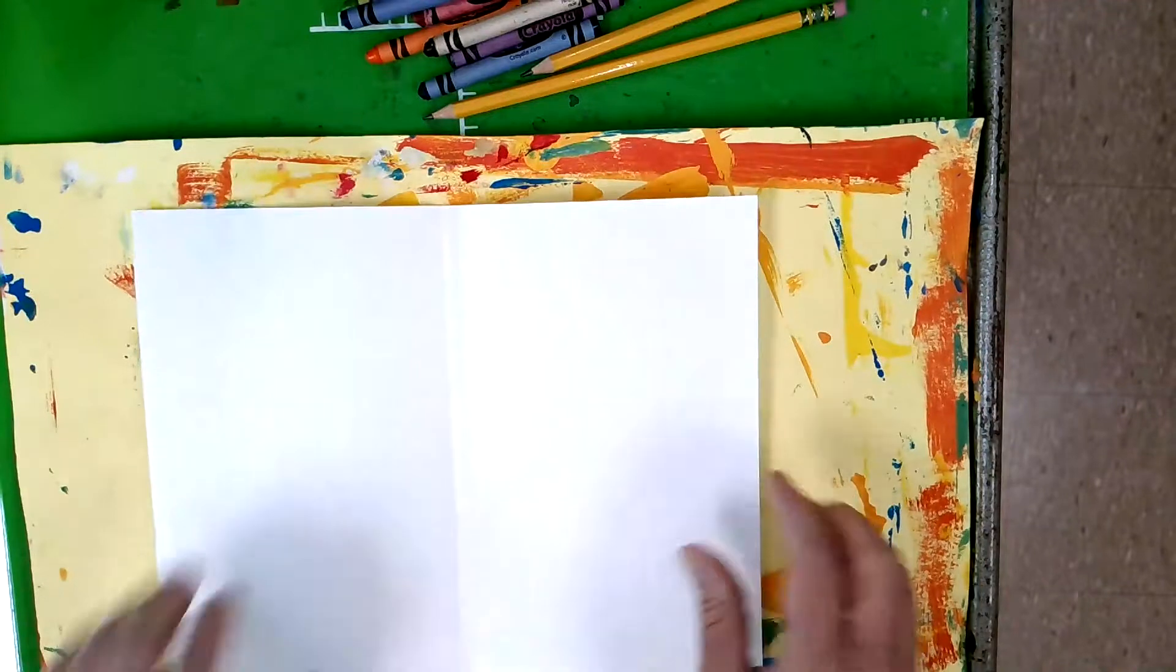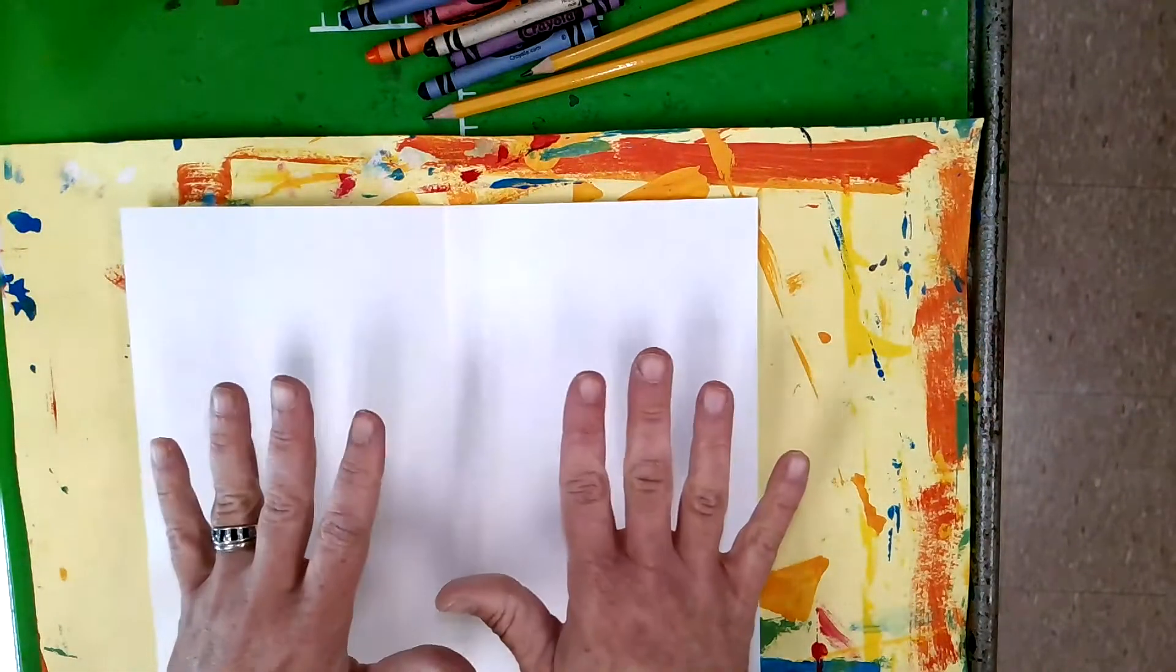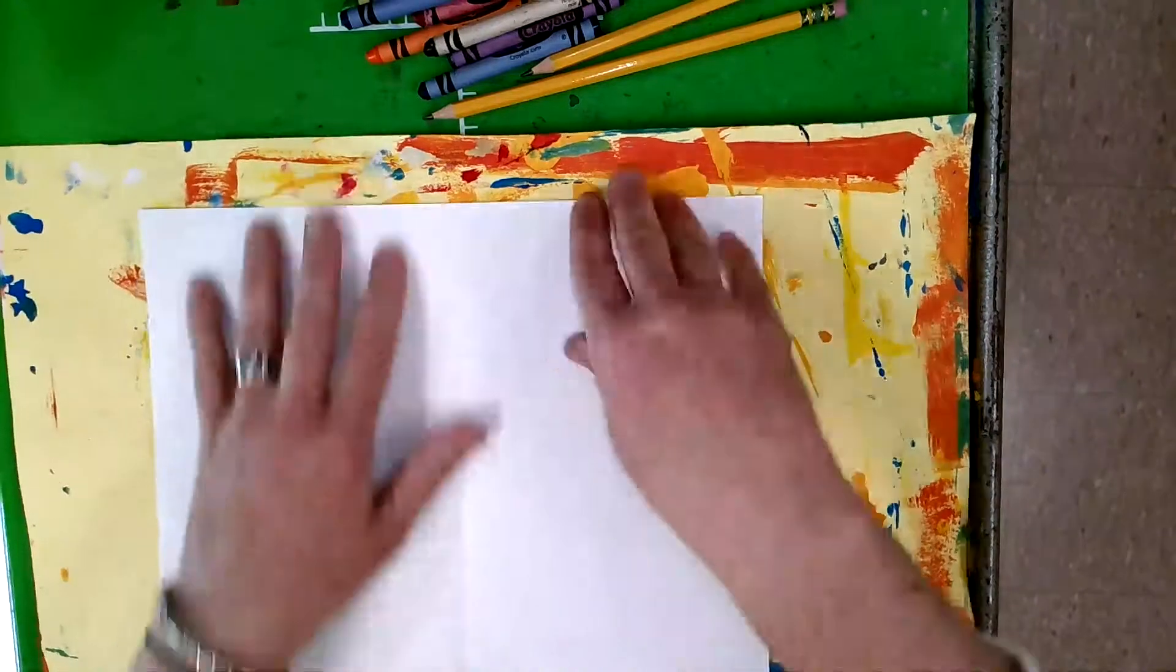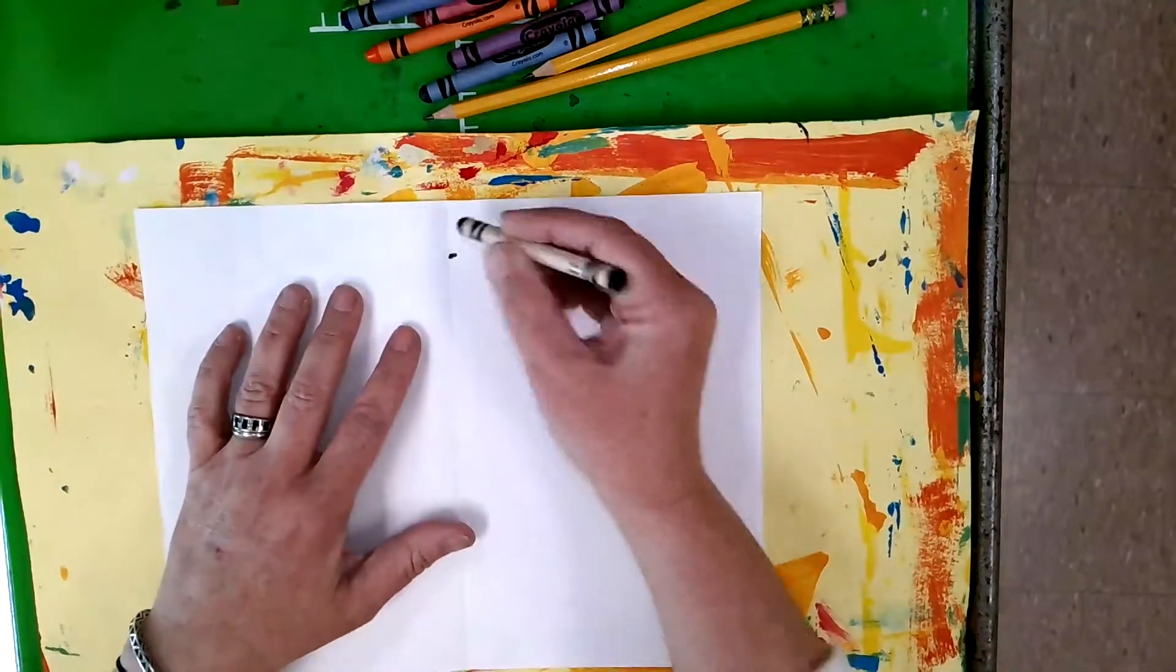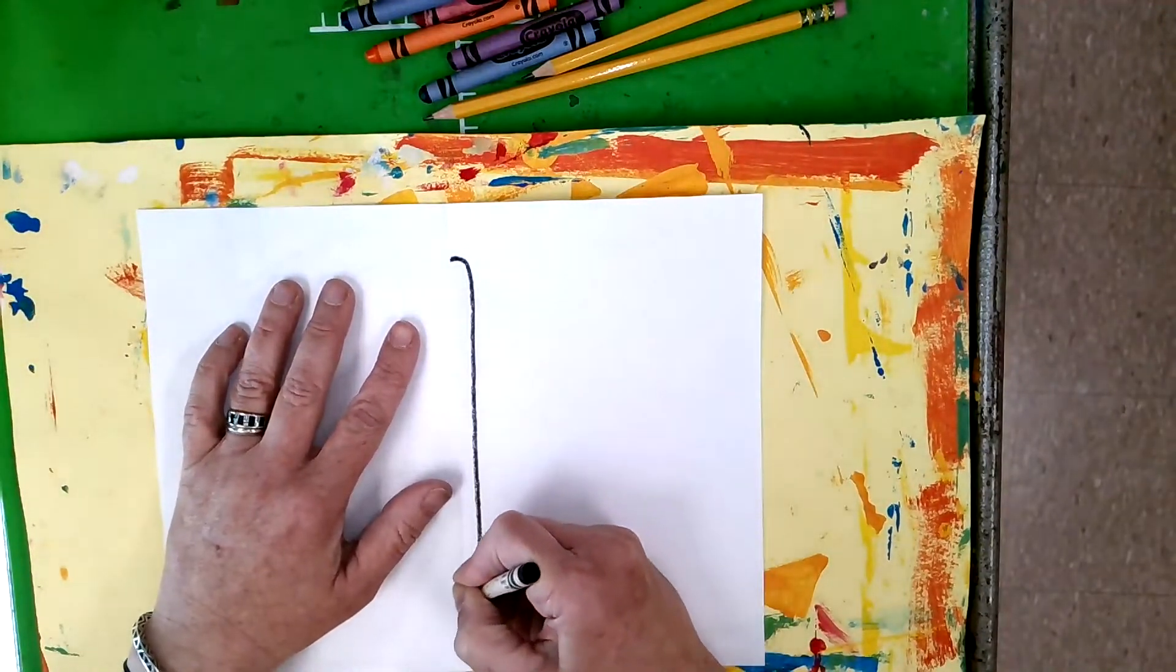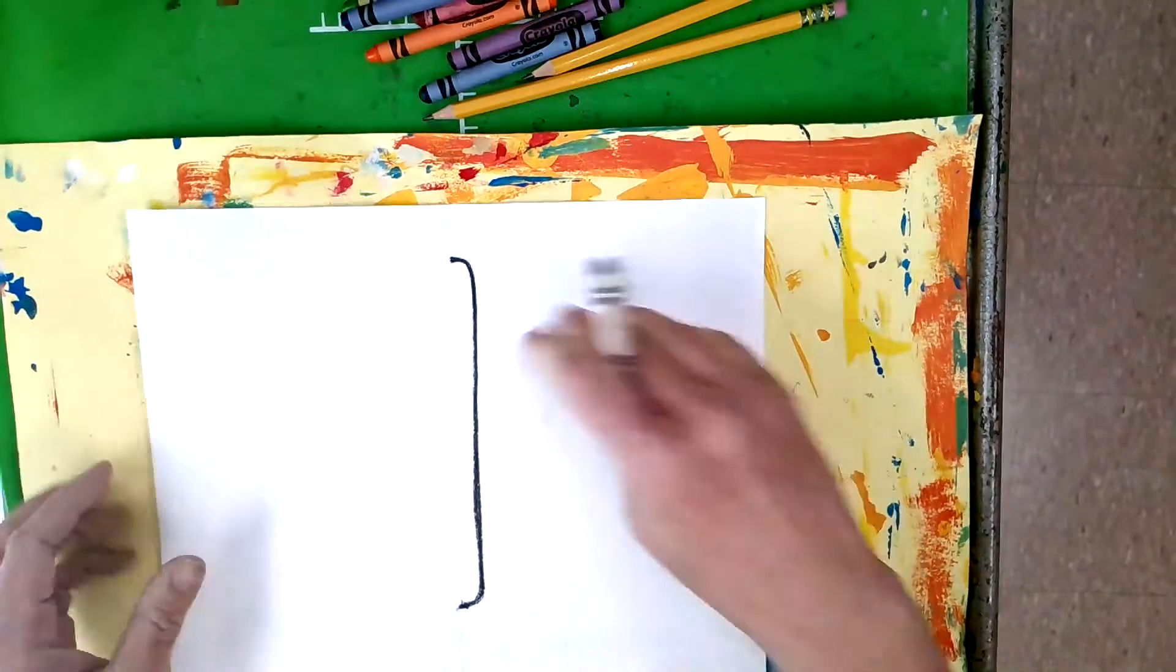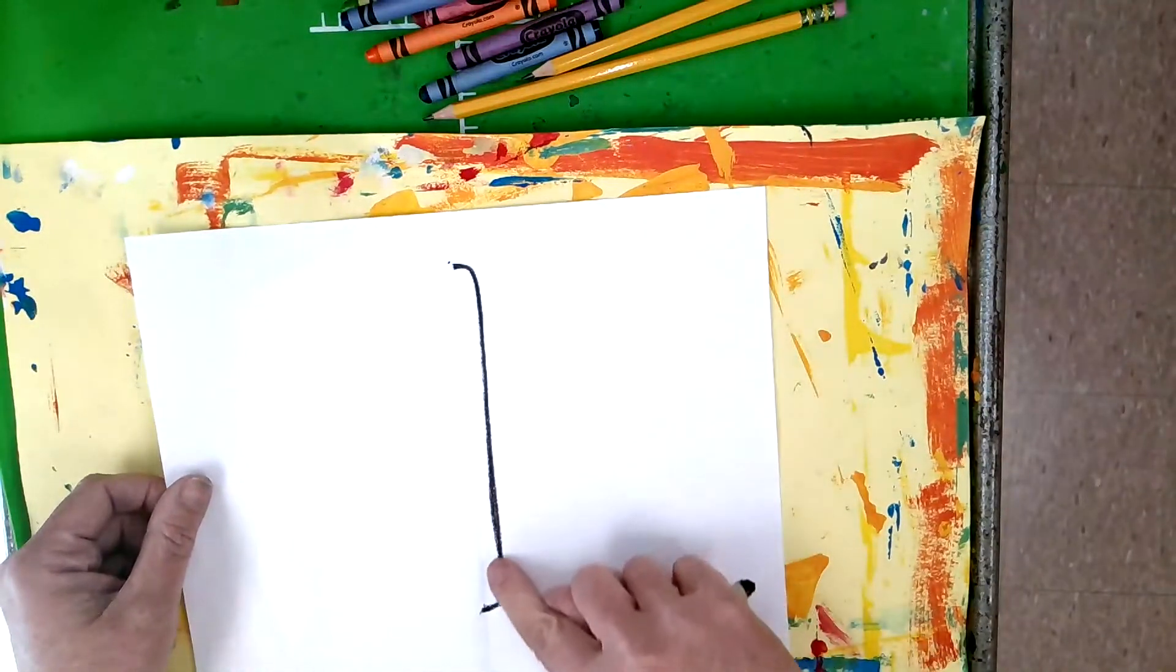Okay we're going to draw half of our butterfly on this side of the paper. Only half. Do not draw anything at all on this side of the paper. Using my black crayon I'm going to start by drawing a long skinny stretched out half of an oval. It's like half of a hot dog.